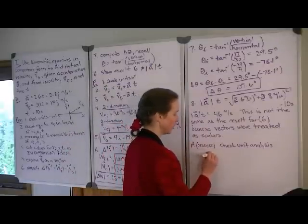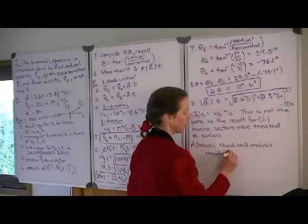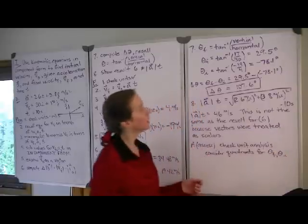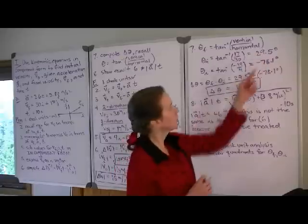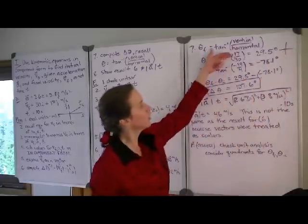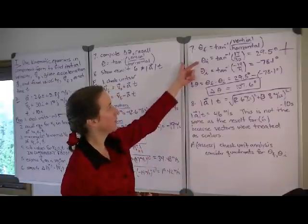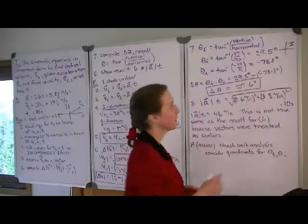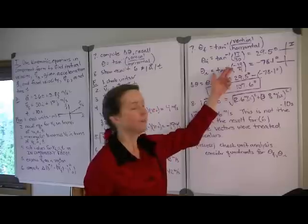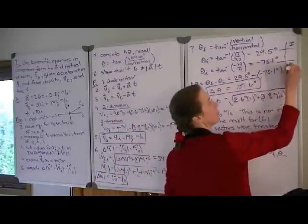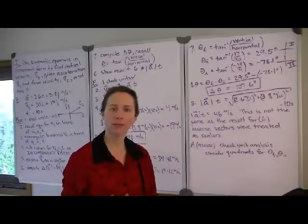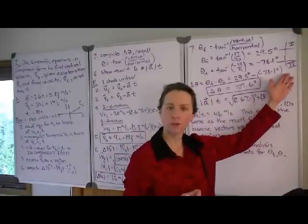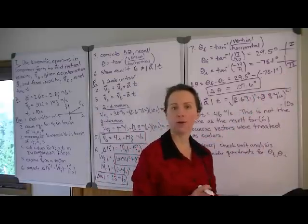Secondly, consider the quadrants for the angles computed. The final angle was in the first quadrant — both vertical and horizontal components of that velocity vector were positive, putting the angle in quadrant one, which is a reasonable result. For the initial velocity vector, we have a negative vertical component and a positive horizontal component, placing us in quadrant four. When using the calculator to determine angles via the inverse tangent function, always verify that the resulting angle is in the correct quadrant, as you may need to convert to an equivalent angle.